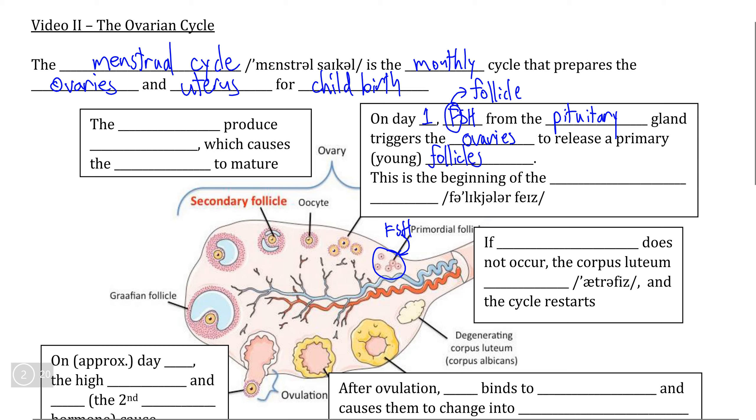which are the groups of cells that contain oocytes, which are the immature ovum.